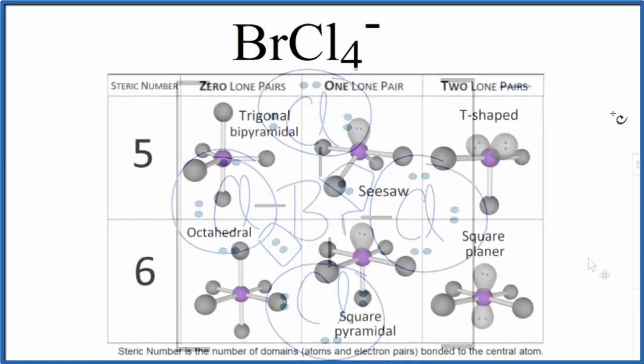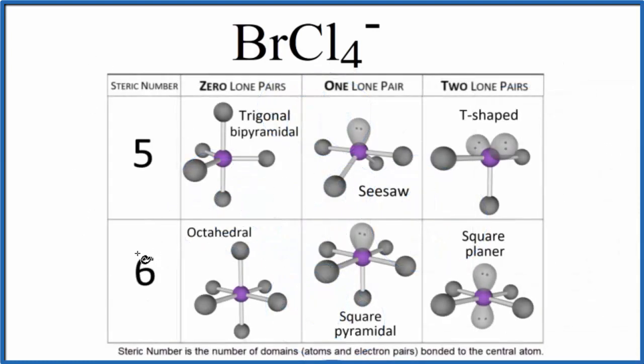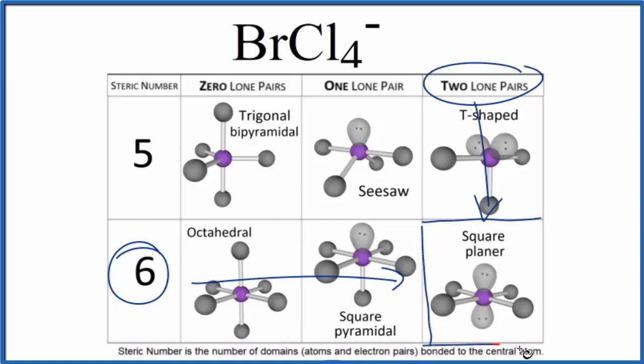Let's look at a chart. So we said we had six things attached to that central bromine, so the steric number is six, and two of those were lone pairs. So we come over here and we come down, and we have this square planar molecular geometry.